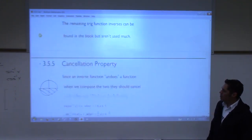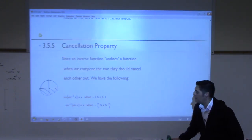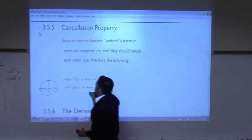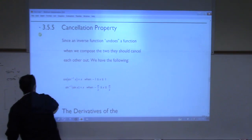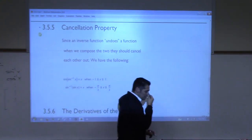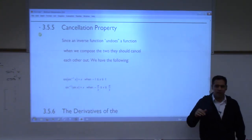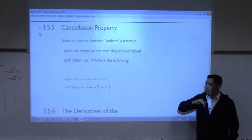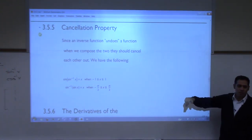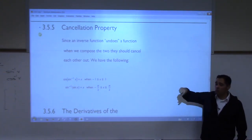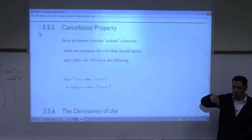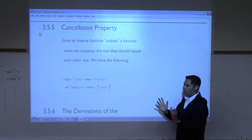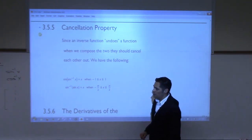We have another property to deal with here — a very important cancellation property. It's like the car wash analogy: you have a clean car wash, and then the inverse will make it dirty again, or you start with a dirty car and go back clean. It doesn't matter which way you go through the functions — if they're inverses, they undo each other both ways.